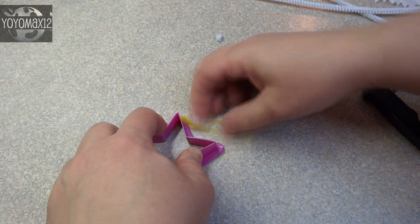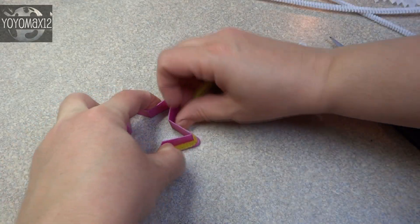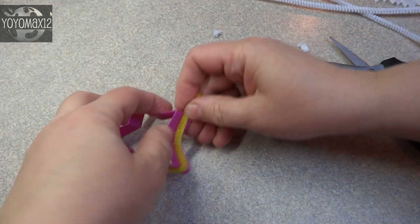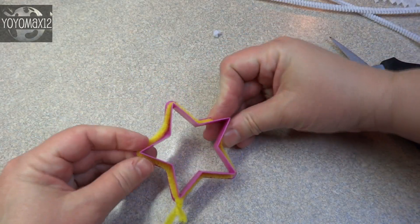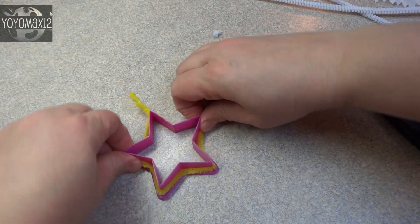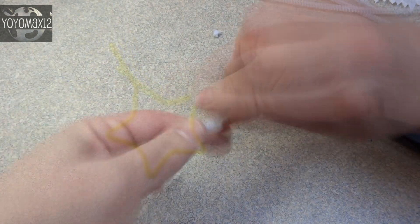Now for the star, I used a yellow pipe cleaner and I just folded it around a star shaped cookie cutter. And when you pull it off, you end up with the shape of the cookie cutter. It's quite ingenious way of doing it.